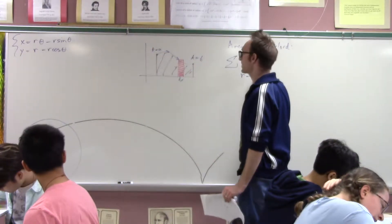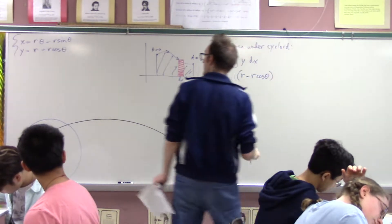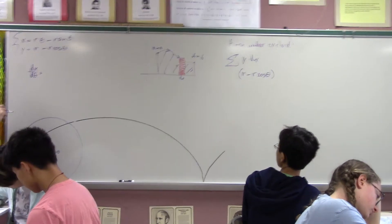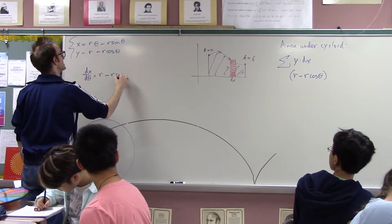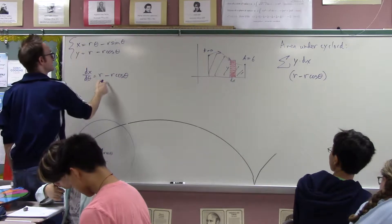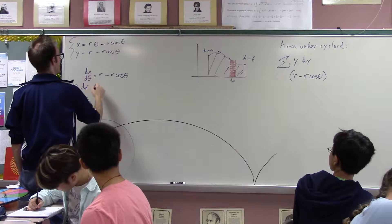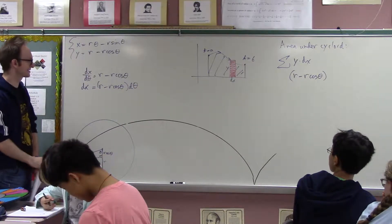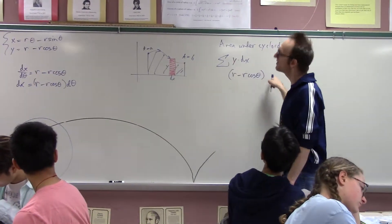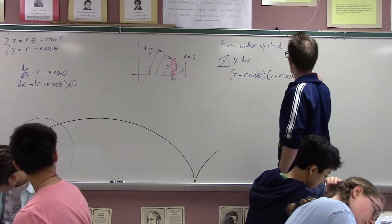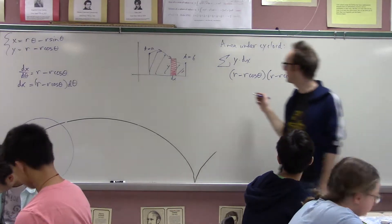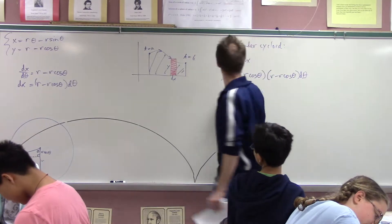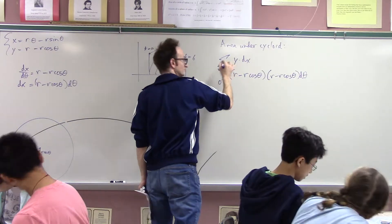If you're taking infinitesimal widths, you just take y times dx and add them all up. To find the area under the cycloid, I want to sum up a whole bunch of rectangles of the form y·dx. What is y? It's r minus r·cos(theta). What is dx/dθ? It's r minus r·cos(theta). So therefore dx equals (r minus r·cos(theta))·dθ. We integrate from theta equals zero to theta equals two pi.